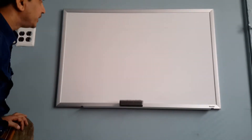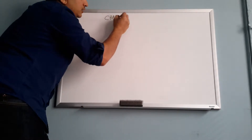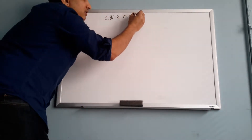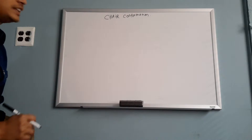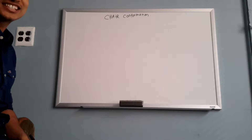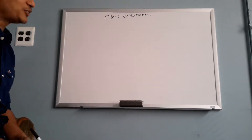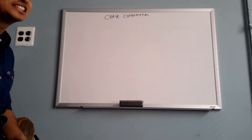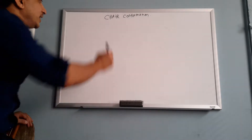Hello everyone. Today I chose a very excellent topic: chair conformation. What is chair conformation? Chair conformation is only possible with six carbons. If there are seven carbons, it's not possible. If there are five carbons, it's not possible. It is only possible with six carbons, like cyclohexane.